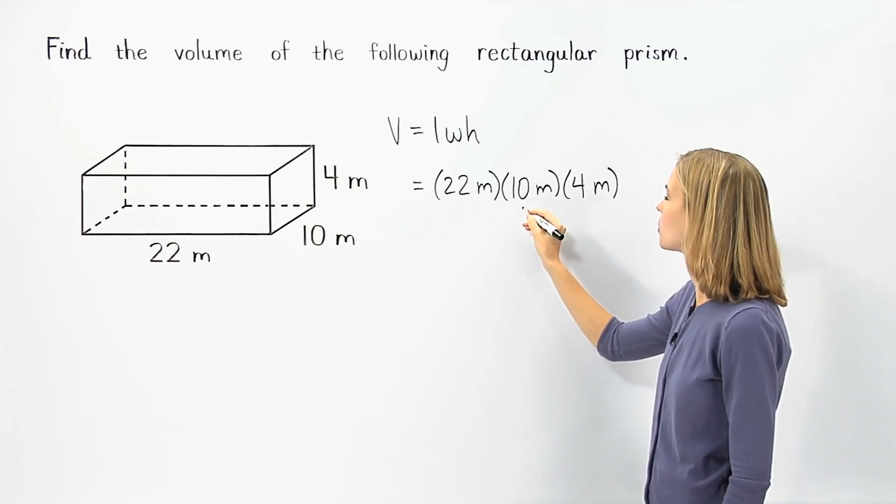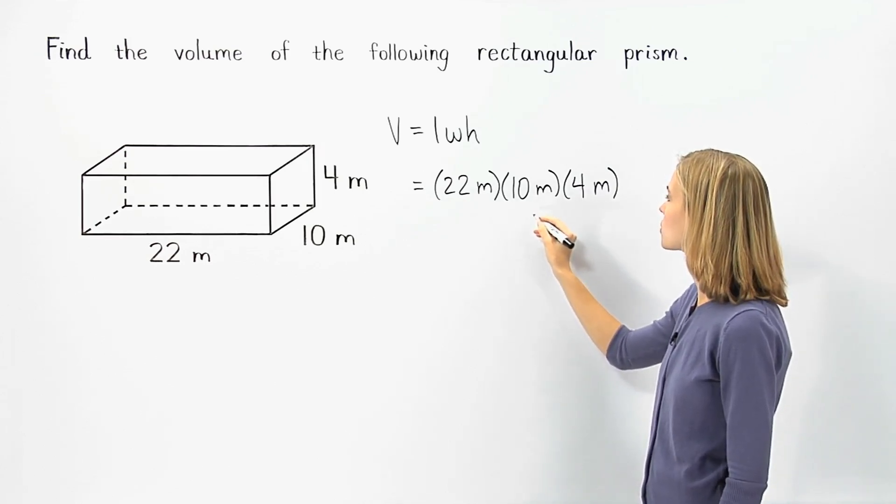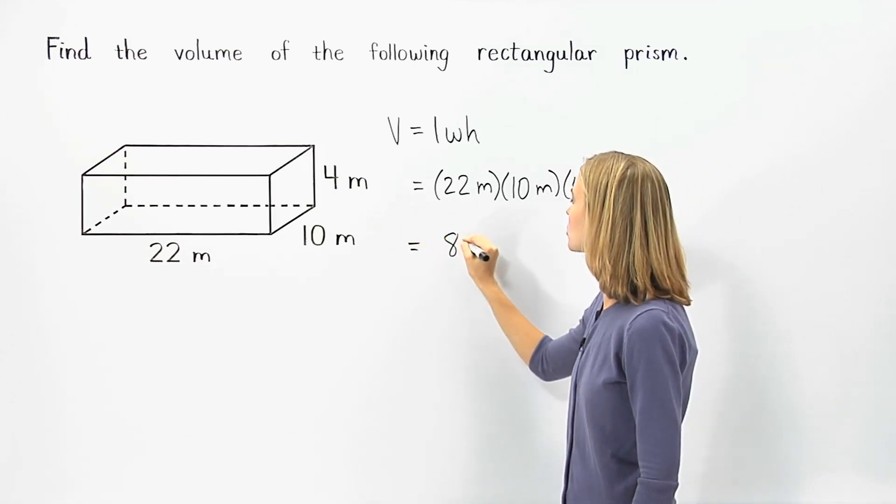22 times 10 is 220, and 220 times 4 is 880.